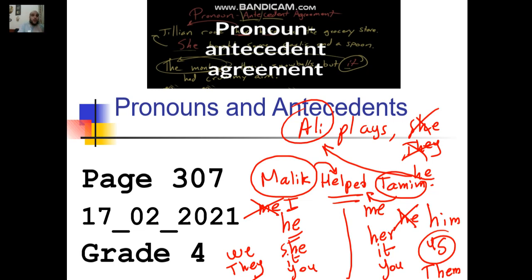Another trick: what comes before the verb is always the subject — it's always I, he, she, it, you, we, and they before the verb. However, me, him, her, it, you, us, and them — the object pronouns — go always after the verb. That's another trick to decide. If you're going to write something after the verb, please make sure it's an object pronoun. If it's going to be before the verb, please make sure it's a subject pronoun.